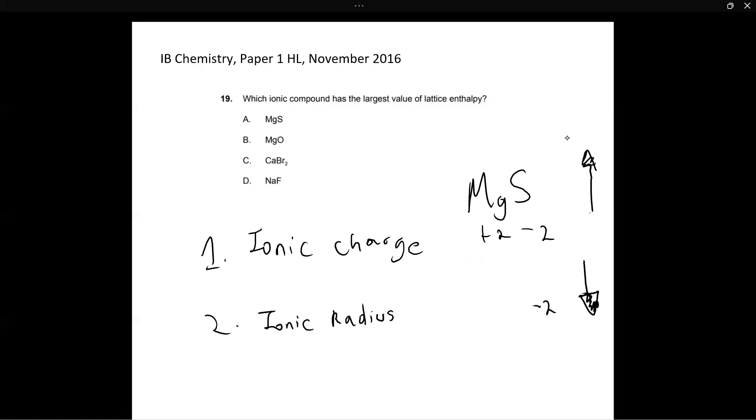Now the next factor that impacts lattice enthalpy is the ionic radius. That basically means the size of your ion. I'm going to take the example of MgCl2 and NaCl. I'm going to ask you to imagine the ion of magnesium. Magnesium forms two plus ions. So this is a magnesium ion. Na forms plus ions. And this is the ion of sodium.